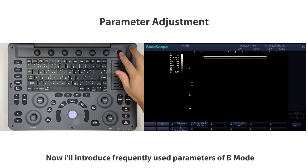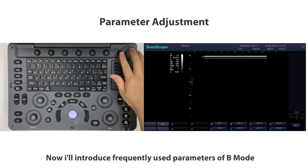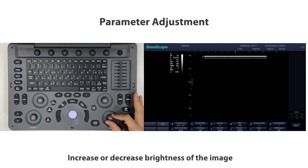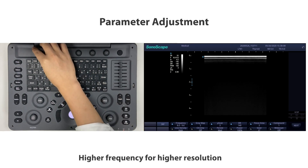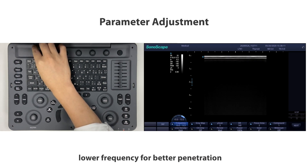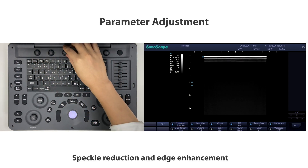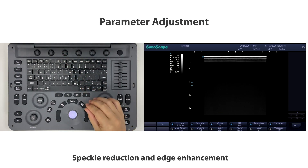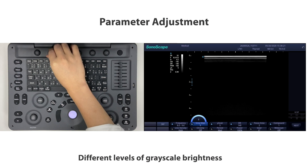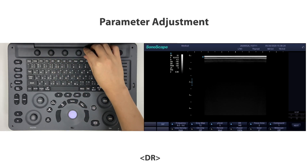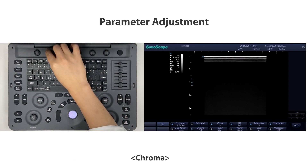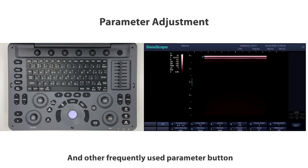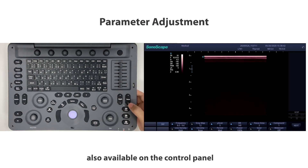Now I'll introduce the frequently used parameters of B-mode: Gain — increases or decreases brightness of the image. Frequency — higher frequency for higher resolution, lower frequency for better penetration. New Scan, Speckle Reduction, and Edge Enhancement. Gray Map — different levels of grayscale brightness. DR — higher dynamic range for more detail, lower dynamic range for higher contrast. Chroma — colorized image.